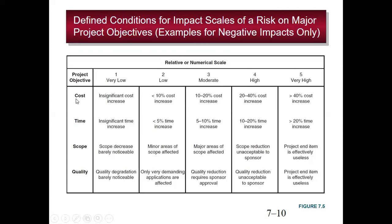If a risk scores 5 on the scale for cost impact, that means there will be a greater than 40% cost increase, which is a very dangerous situation. But if it scores 1, that means an insignificant or negligible cost increase. In that case, we would not spend time on that risk, since it does not significantly impact cost, time, scope, or quality. Risks with higher impact are more critical, and we try to eradicate or at least minimize their negative influence.